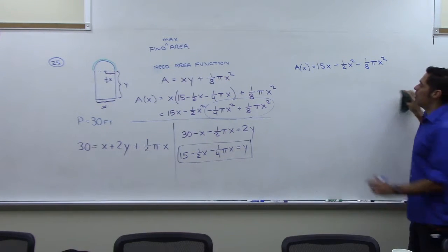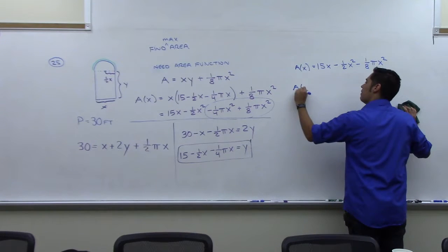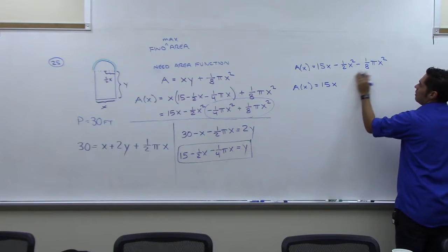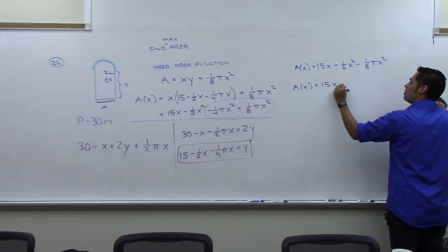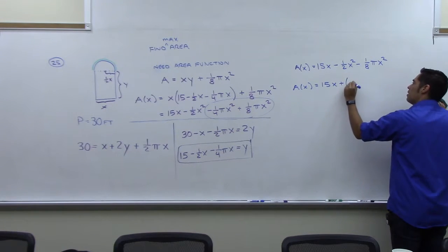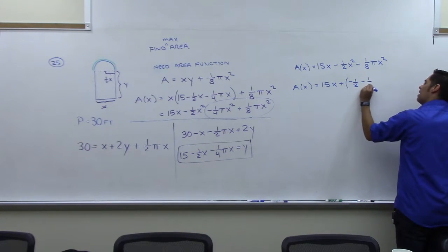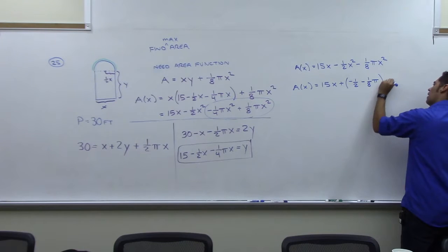And since these are both x squareds, watch what I do here. A of x equals 15x. I'm going to factor out an x squared from both of these.